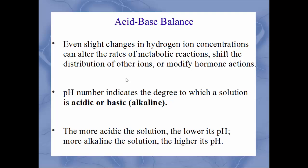Hydrogen ion concentration is tracked by the pH scale, ranging from 0 to 14. A pH of 7 is completely neutral. Numbers 0 to 6 are acidic and numbers 8 to 14 are alkaline or basic — these two terms are interchangeable. The more acidic the solution, the lower the pH number; a strong acid has a pH around 1, and a strong base has a pH around 14.